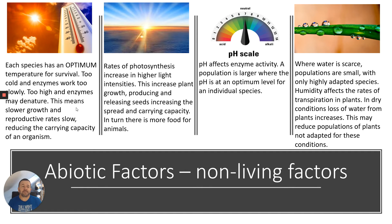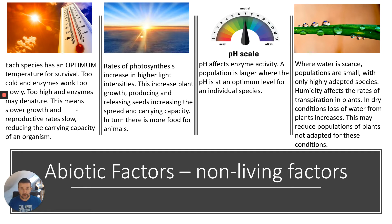Water and humidity are also key abiotic factors. Where water is scarce, populations are small unless they are very highly adapted species. Humidity affects rates of transpiration. In dry conditions, loss of water from plants can increase, reducing populations of plants not adapted for those particular conditions.